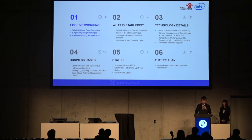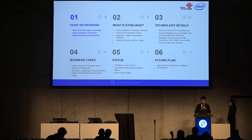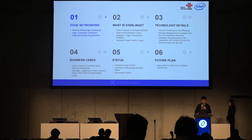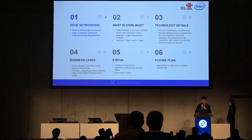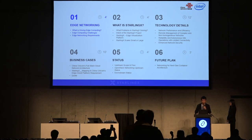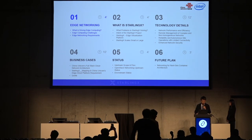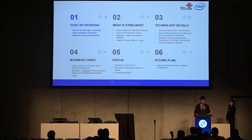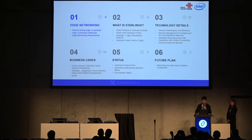For today's presentation I will divide it into six sections. In the first section I will introduce what edge computing is and why we are talking about edge networking today. I will also present the StarlingX project, which was open-sourced since the last Vancouver Summit, and go deep diving into the technology details, especially focusing on the networking enhancements for the edge. After that, Dr. Chen Dan will share a business case with the deployment of StarlingX in China Unicom. In the last two sections I will show you the status of the StarlingX networking project and share our future plan for the edge.